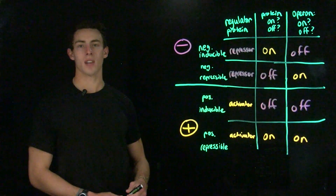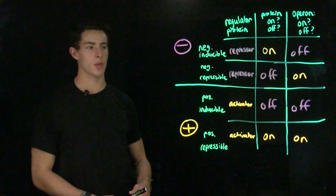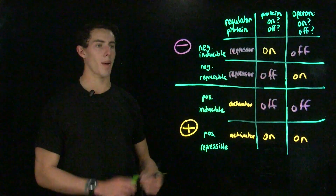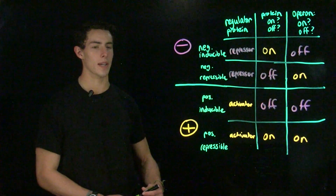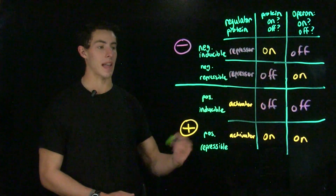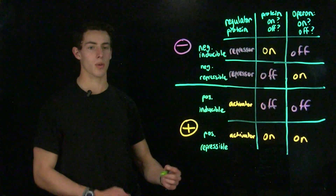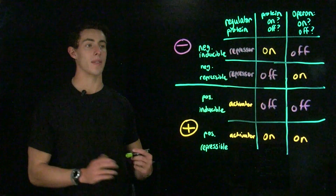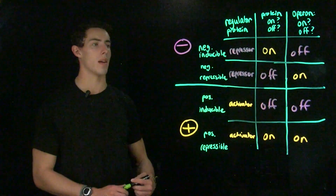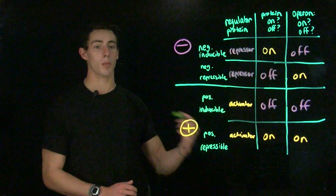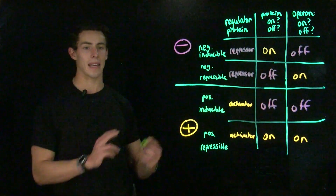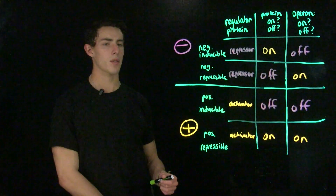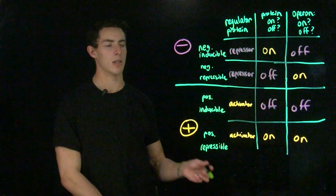Before we discuss the operon further, let's clarify some terminology. If we talk about positive control, that means that the regulatory protein is an activator, so it's going to activate transcription. If we're talking about negative control, that means that we have a repressor protein, so we're going to be inhibiting transcription.